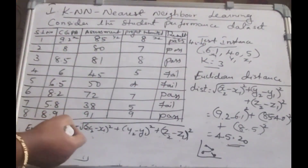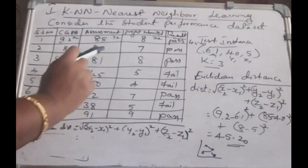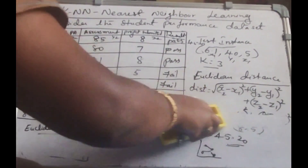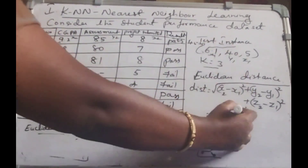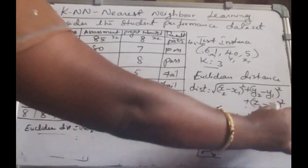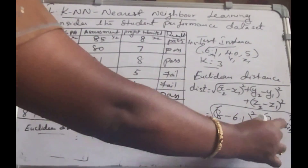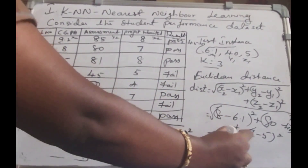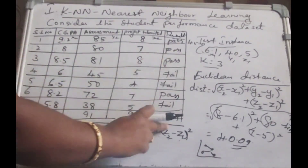Similarly, I want to calculate the Euclidean distance for the second instance. X2 is 8, so 8 minus 6.1, the whole square, plus 80 minus 40, the whole square. Taking the square root of all of this, plus 7 minus 5, the whole square. Computing this gives 40.09. So the Euclidean distance for the second instance is 40.09.